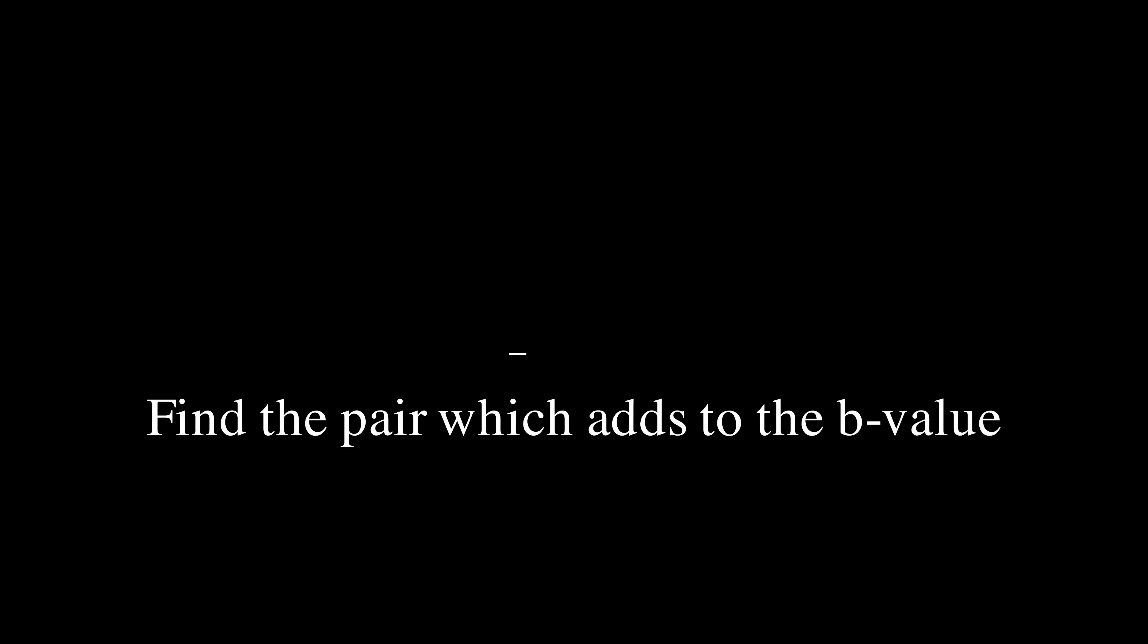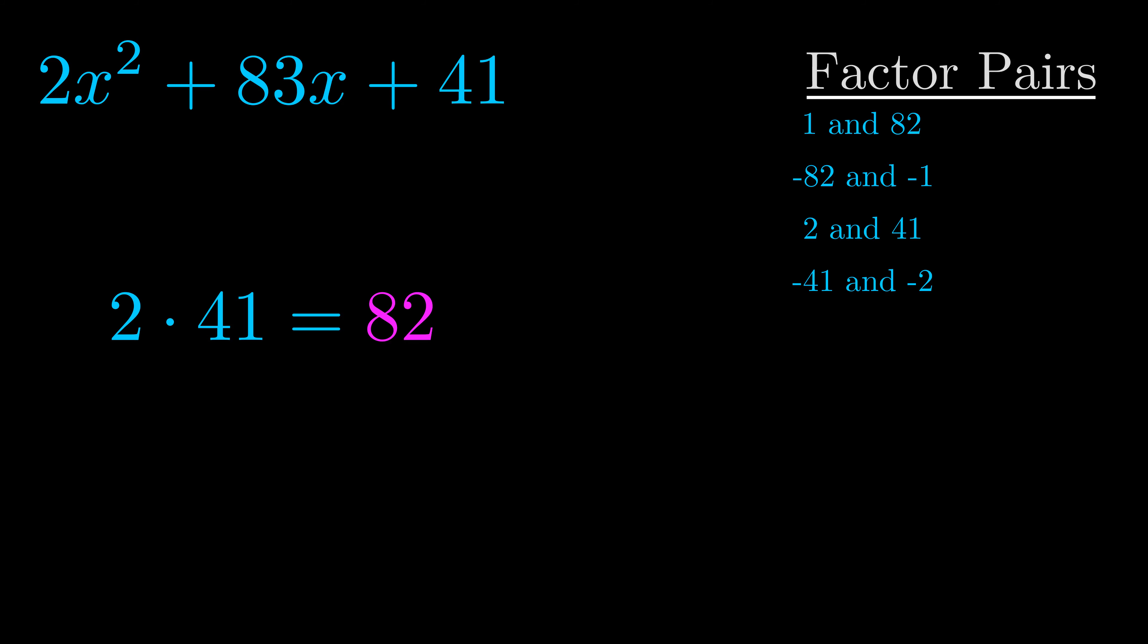The b value is the coefficient on the x term. That's the middle term, the one that we haven't done anything with yet. And really this is the only factor pair that we need.